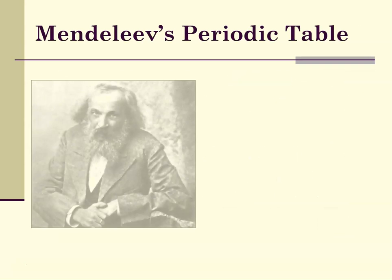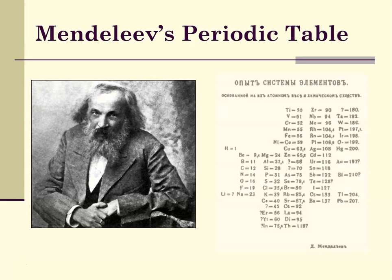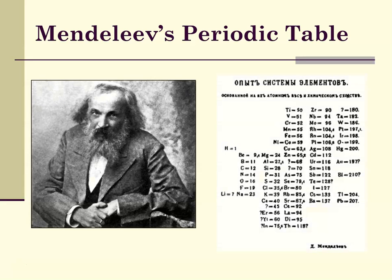Here is Dmitry Mendeleev, and here is his Periodic Table. You will notice it is written in Russian, because that's what he was, and you'll see that there are blank areas here where he left room for elements that had yet to be discovered.